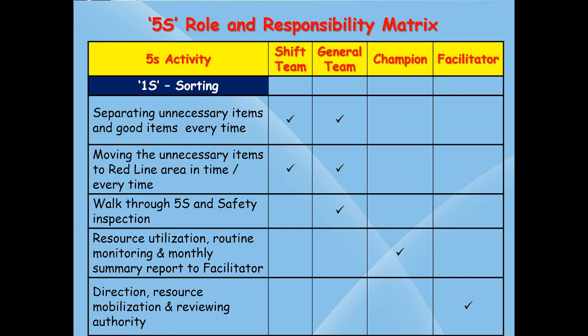In this slide, the 5S roles and responsibility matrix is shown. It highlights who the people are and what activities they have to do against each S. The teams are: shift team, general team, champion, and facilitator. Under 1S, activities include: separating unnecessary items from good items every day; moving unnecessary items to the red tag area in time; walkthrough 5S and safety inspection; resource utilization; routine monitoring and monthly summary report to the facilitator. Direction, resource mobilization, and review authority are duties of the facilitator.